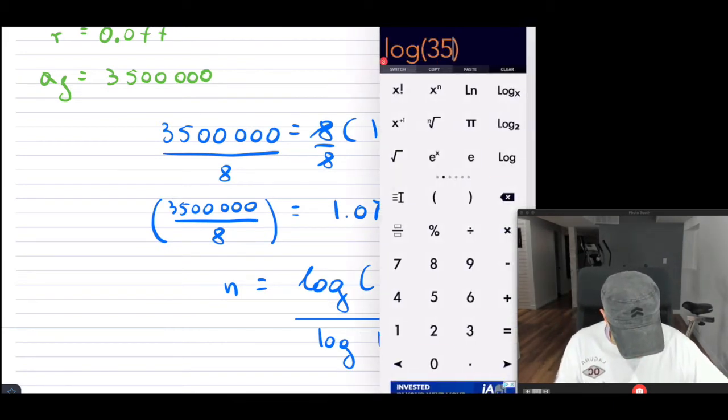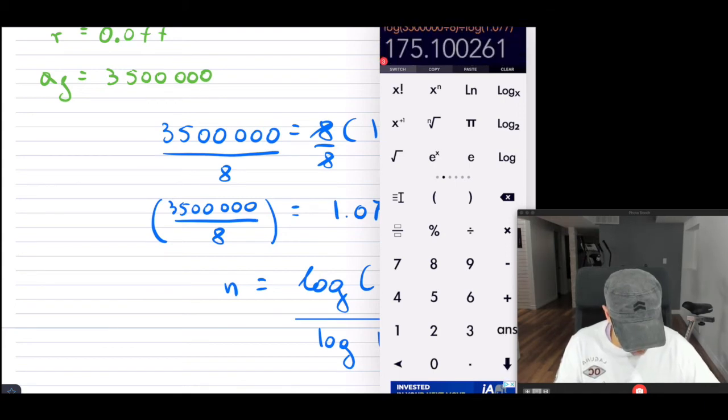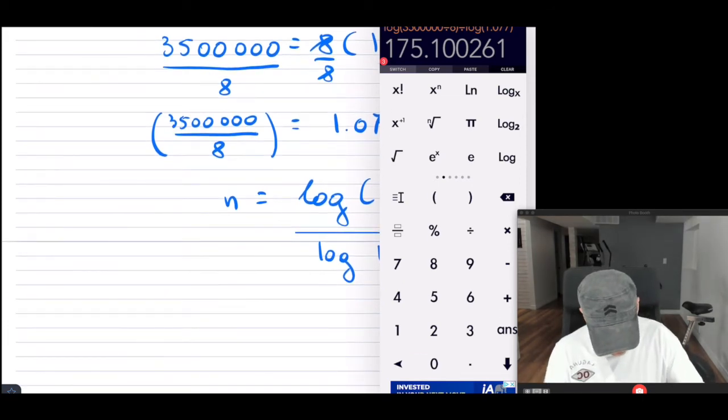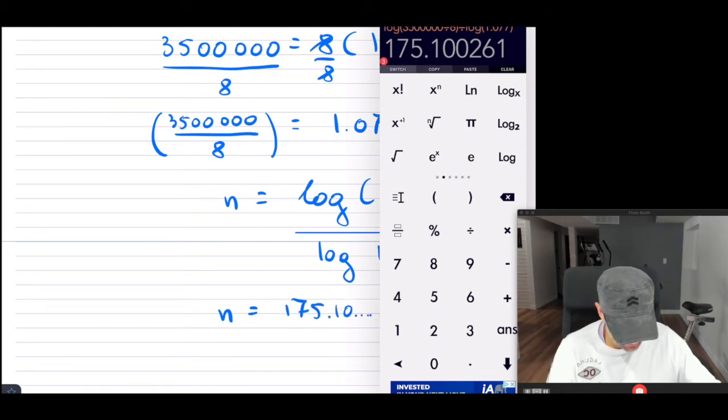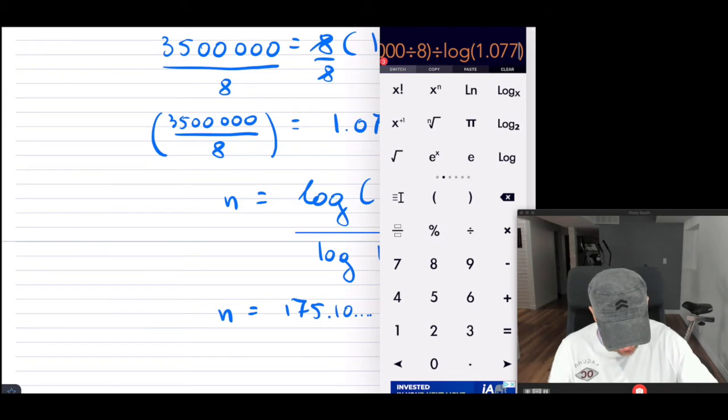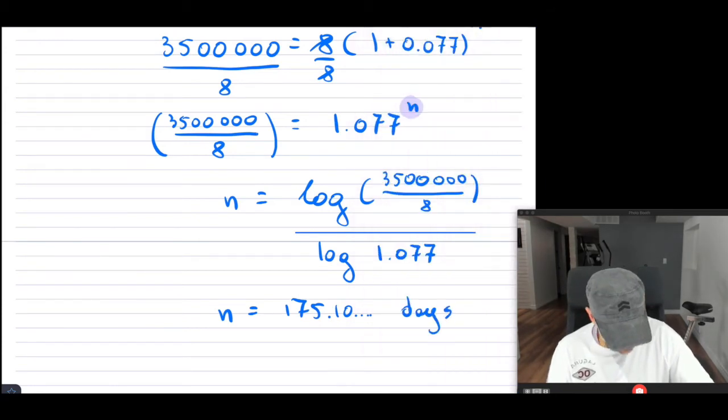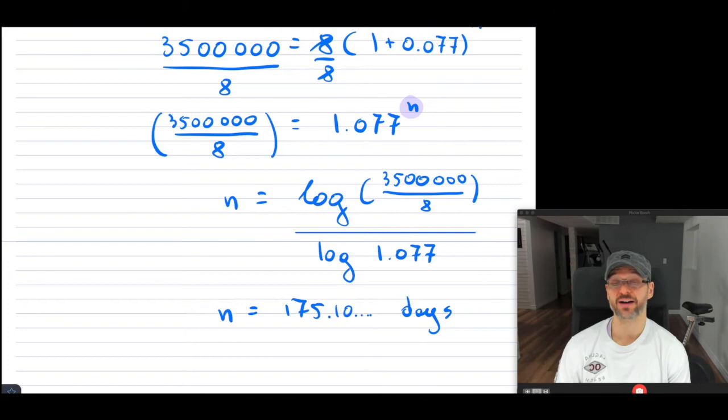So log, so 3 and a half million divided by eight, and then divide this by 1.077, which is really how fast it's spreading. So it's not spreading too quickly. But take a look, okay? So this is approximately, so N equals 175.10 and so on, dots there. That's how many days it would take. So that's actually not that many days to infect three and a half million people. So that's interesting.